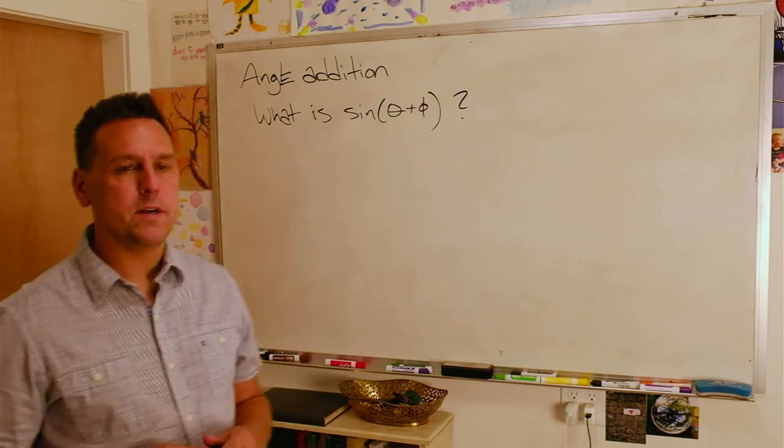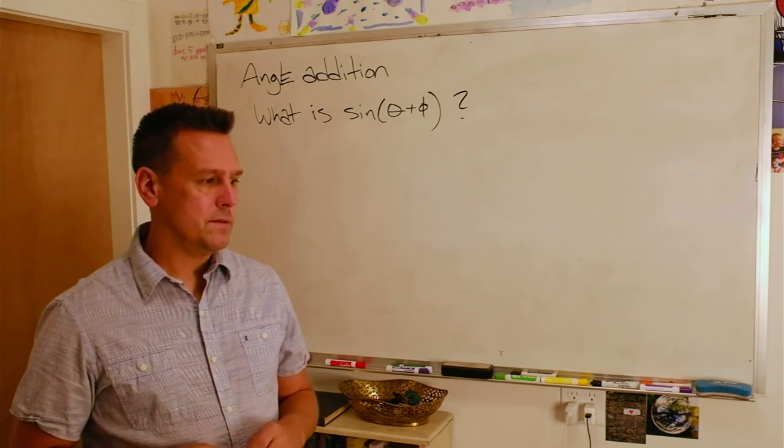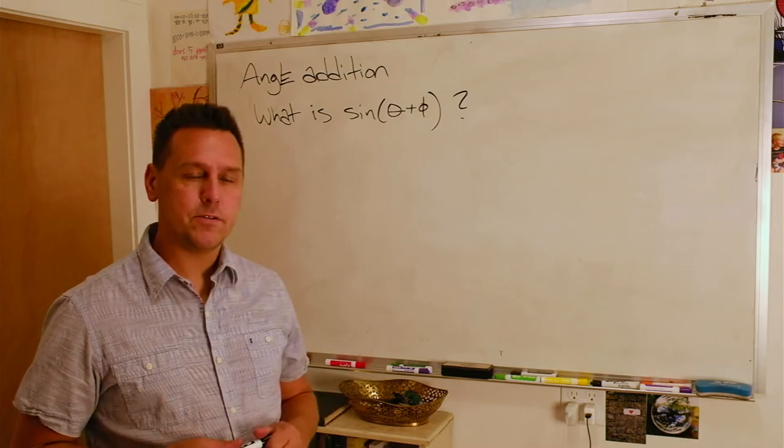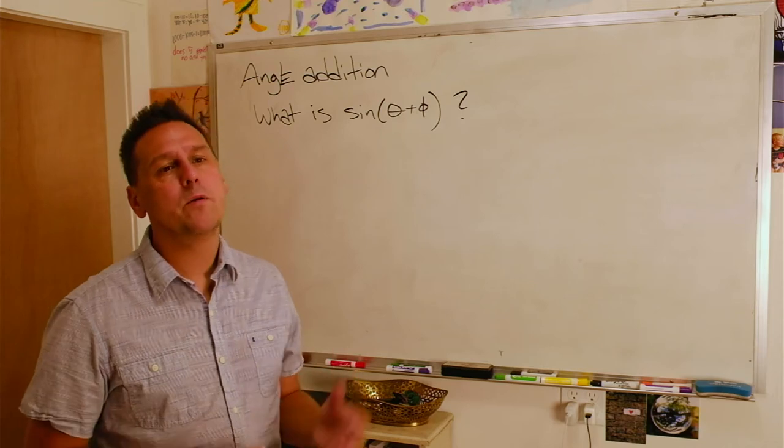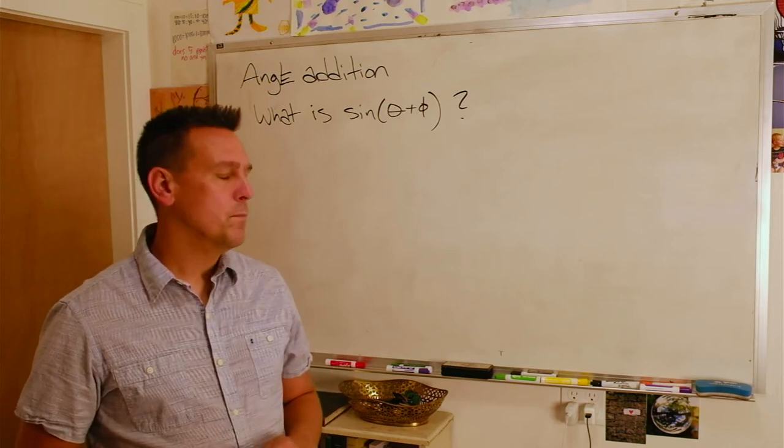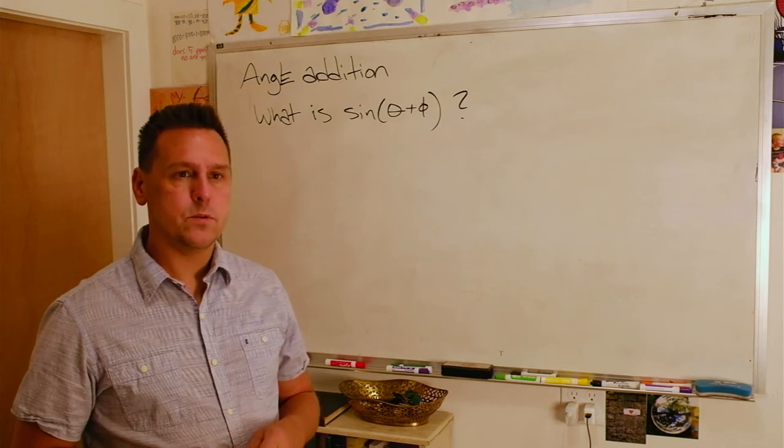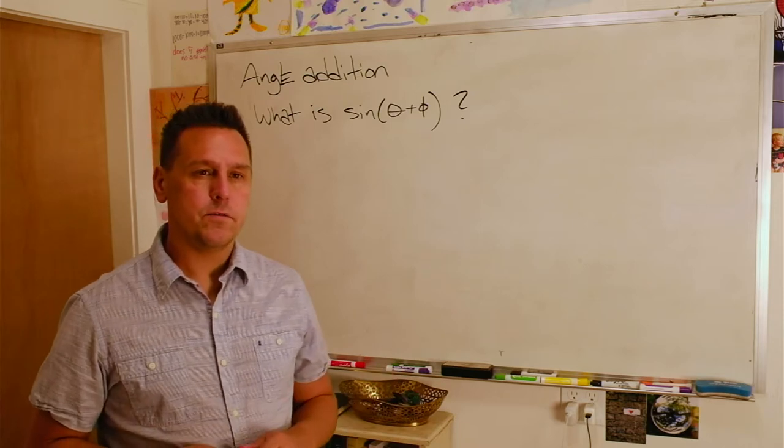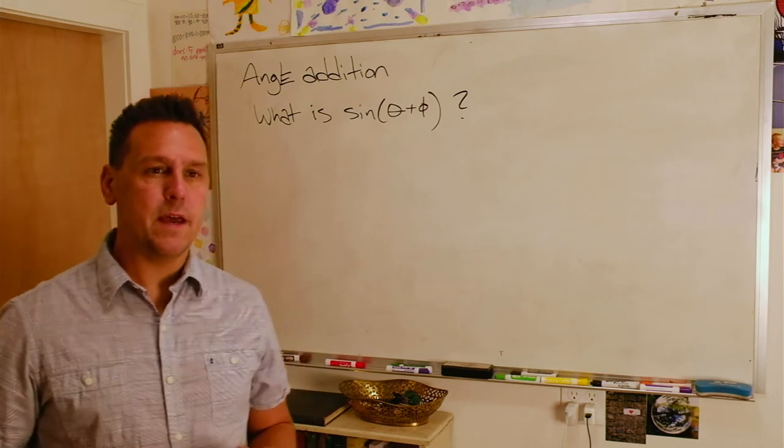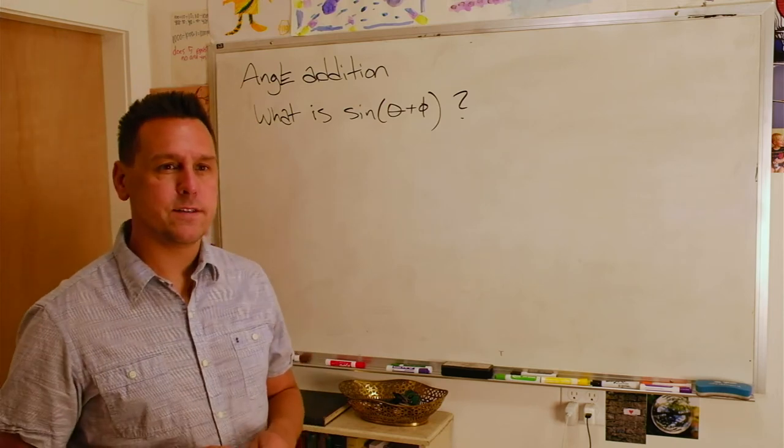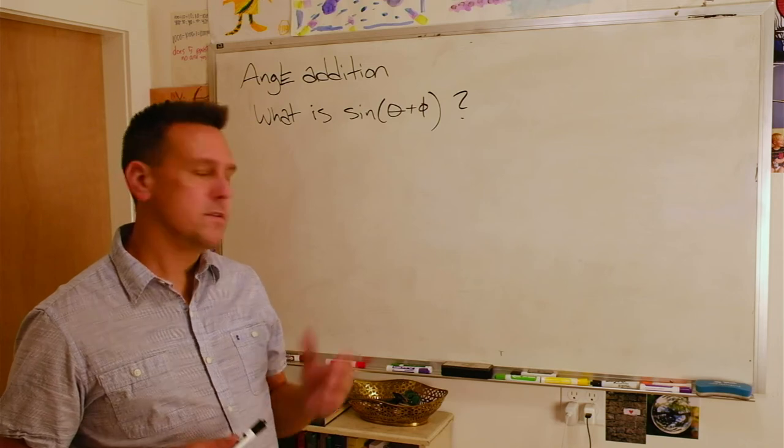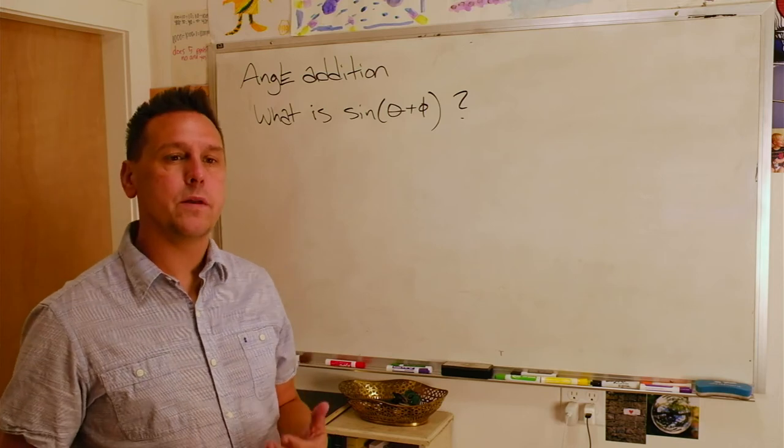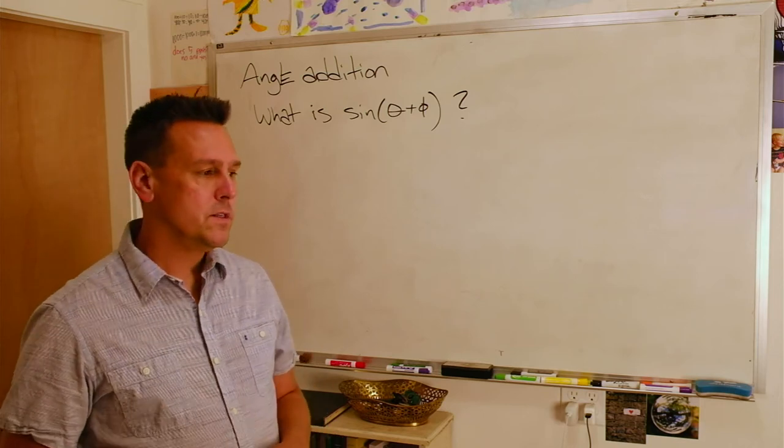This is a formula we all memorize in school, but usually we don't know why we're memorizing it or what it's useful for other than the trig identities they give us to solve after that. We also don't necessarily know how you would arrive at that formula, but historically we've seen that this was super important in being able to create tables of sines and chords of different angles back in an age before we had machines to do these kinds of calculations for us. This is sort of the first intellectual tool you really have to get anywhere from just knowing the sines of easy angles to being able to make such a table.